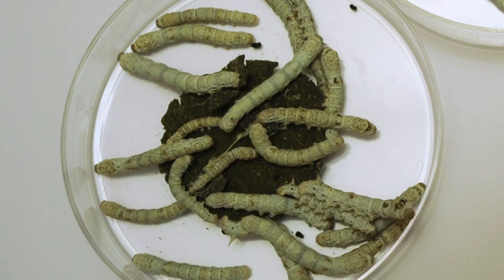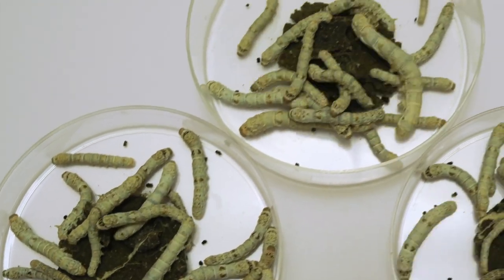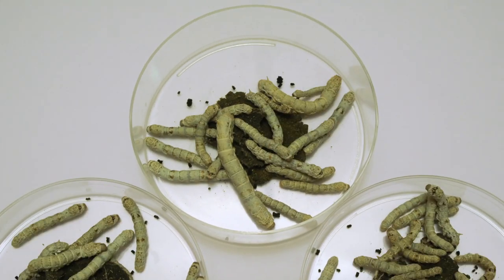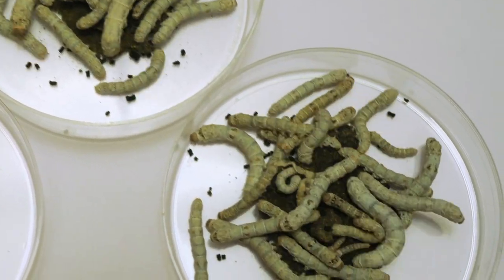We use silkworms because they're easy to rear in the laboratory. They're sort of a lab rat of the insect world. We purchase silkworm eggs and after those eggs hatch, we raise the caterpillars on diet that we mix up. The diet is basically powdered mulberry leaves.